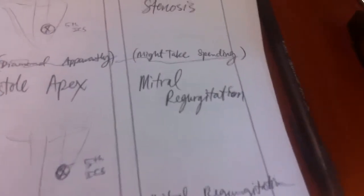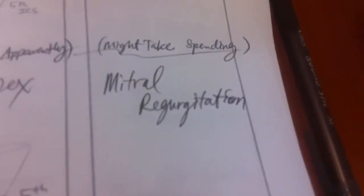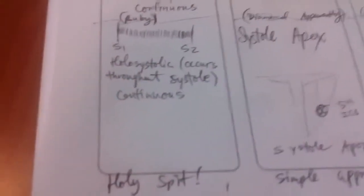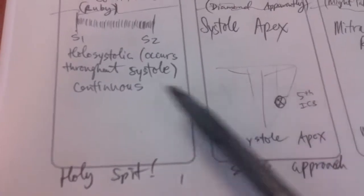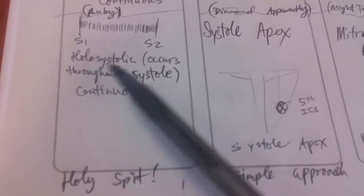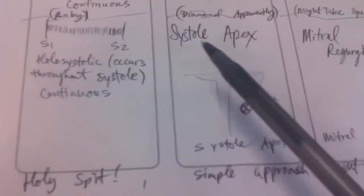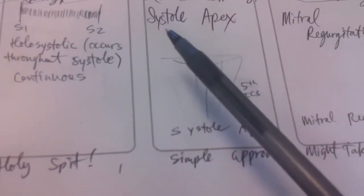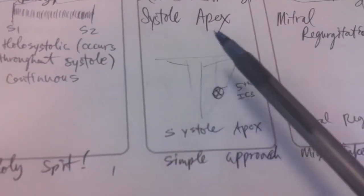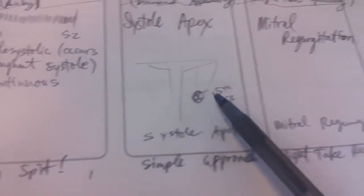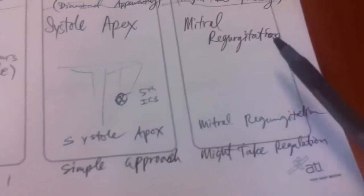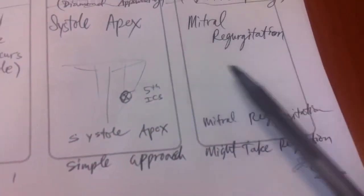The second murmur is mitral regurgitation. It has a holosystolic sound, heard during systole, and it's heard at the apex — the 5th intercostal space.